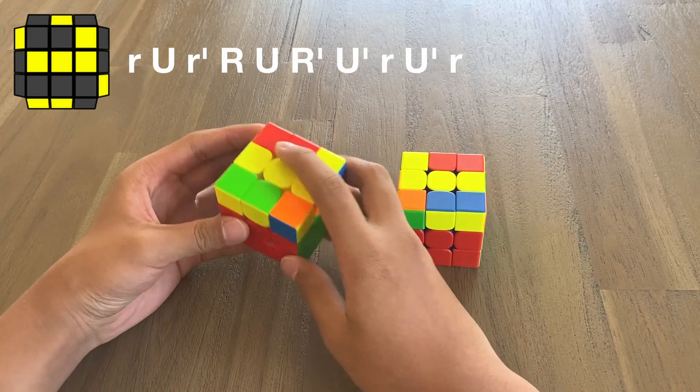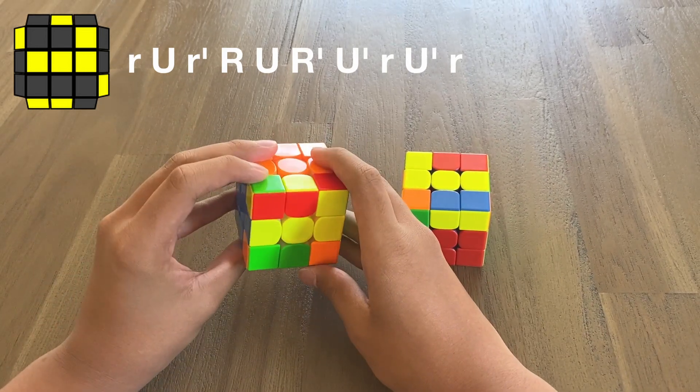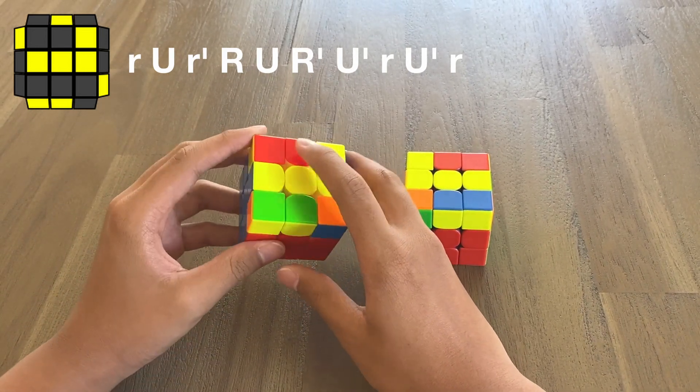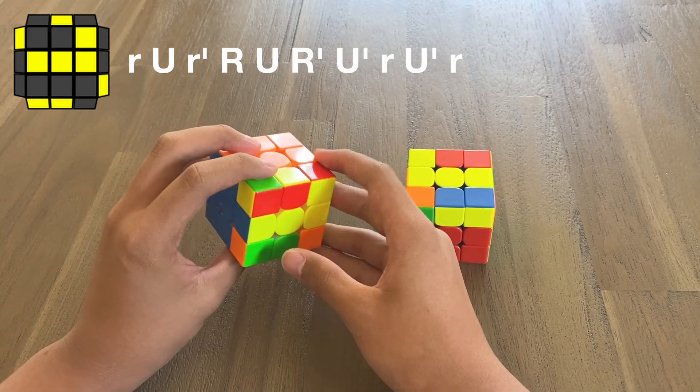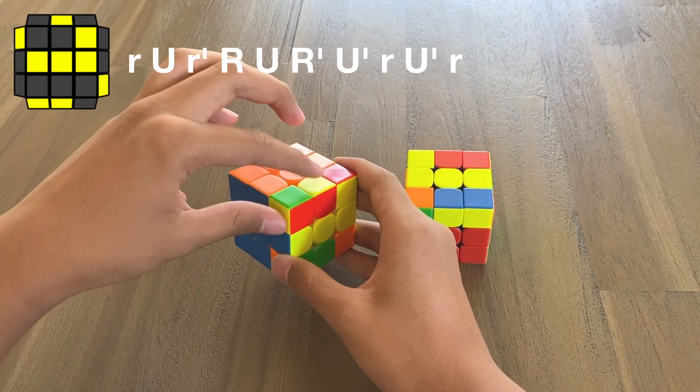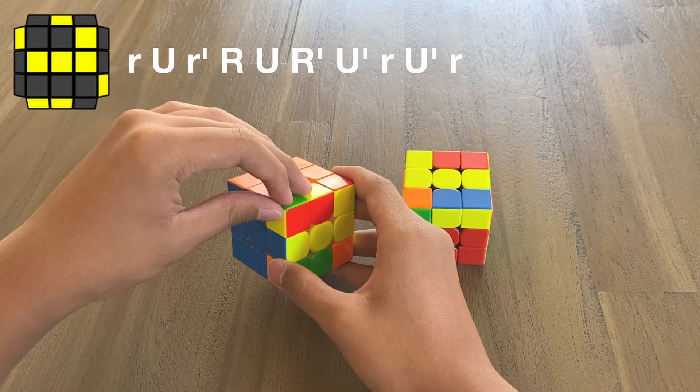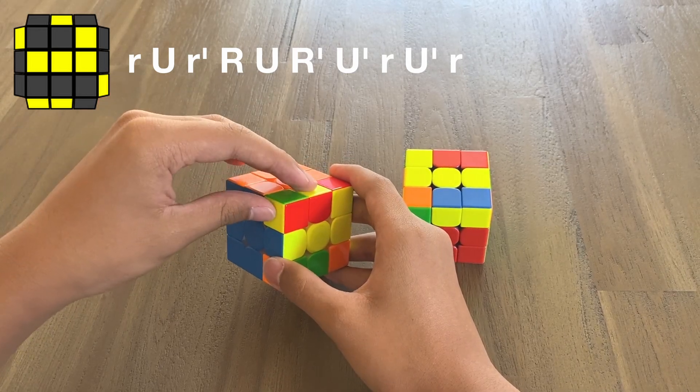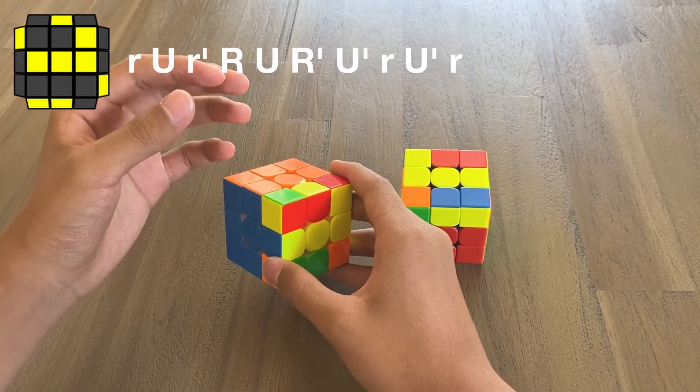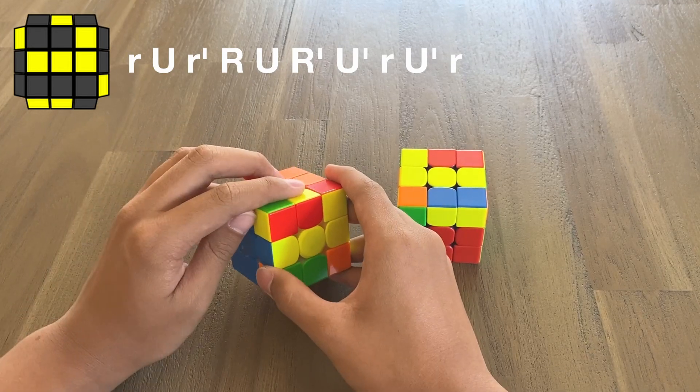This is the large L or knight move shape, and you want to make sure that the part underneath the L is not a bar. So as you can see here, these two are not continuous, they are broken apart. And if you do have the bar, it's a different case, but we won't be talking about that in today's video.